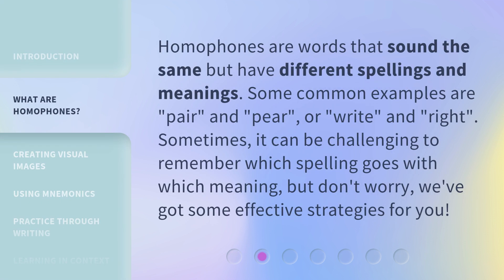Homophones are words that sound the same but have different spellings and meanings. Some common examples are 'pair' and 'pear,' or 'right' and 'write.' Sometimes it can be challenging to remember which spelling goes with which meaning, but don't worry — we've got some effective strategies for you.